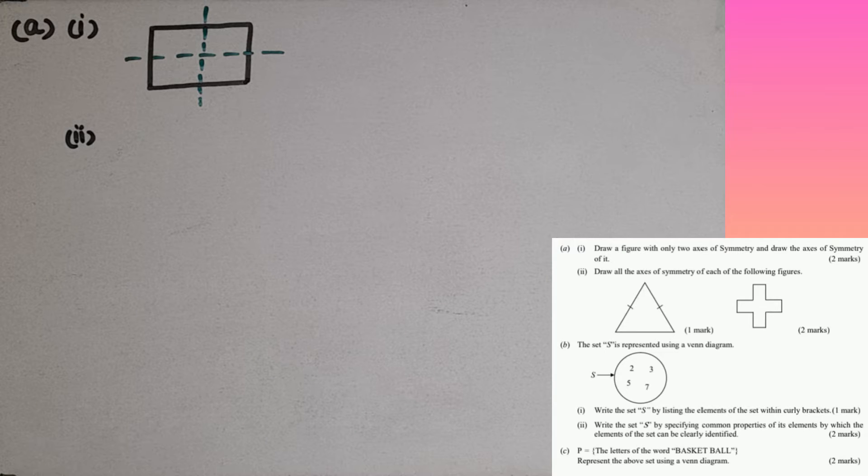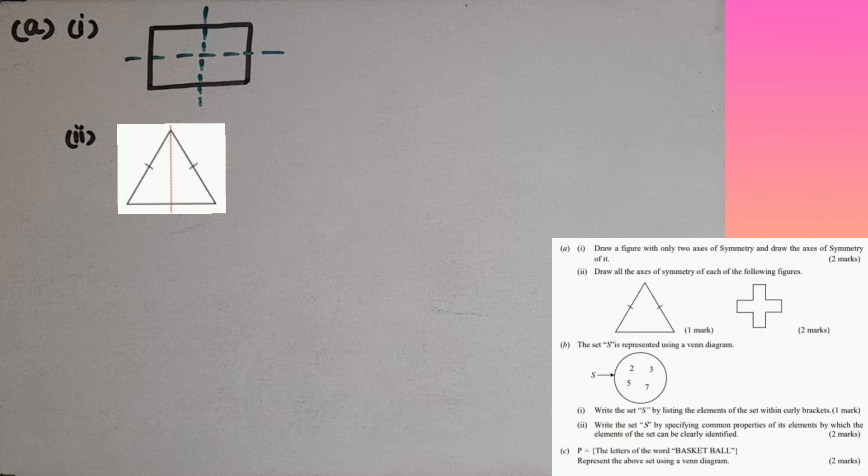Second question. Draw all the axes of symmetry of each of the following figures. The first figure is an isosceles triangle. Two sides are equal in length. So we can take one axis of symmetry like this.